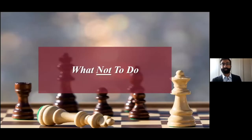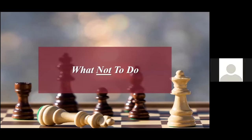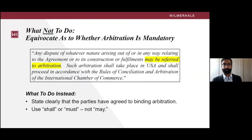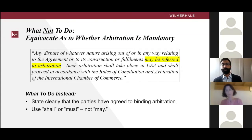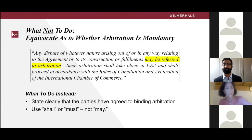Now let's talk about what not to do. The first, perhaps most common mistake is to be unclear as to whether arbitration is mandatory and binding. We see here an example of an arbitration clause that states that any dispute 'may be referred to arbitration.' That does not commit the parties to arbitration, and the outcome may be protracted litigation about how exactly to resolve any disputes that arise. To avoid equivocation, arbitration agreements should state that disputes 'shall' or 'must' be referred to arbitration.